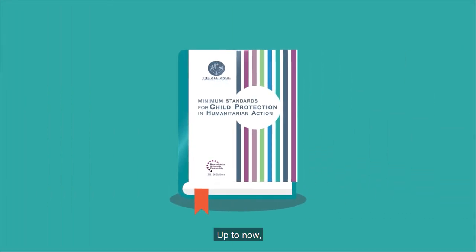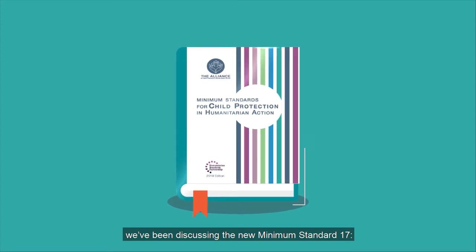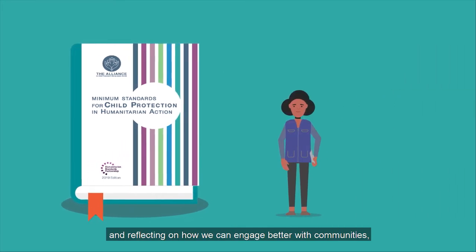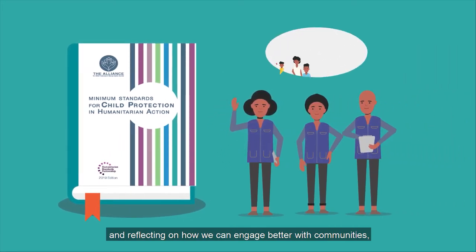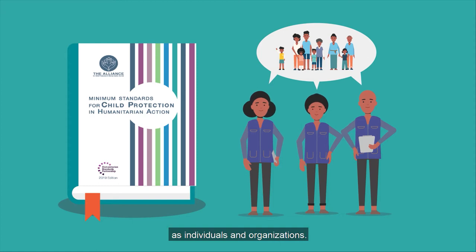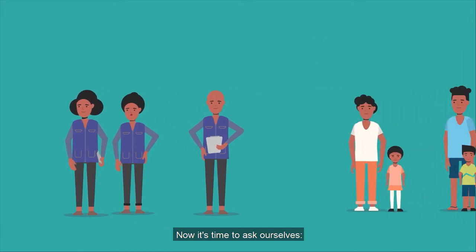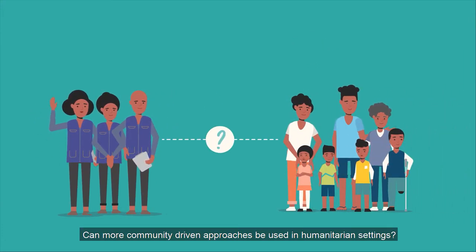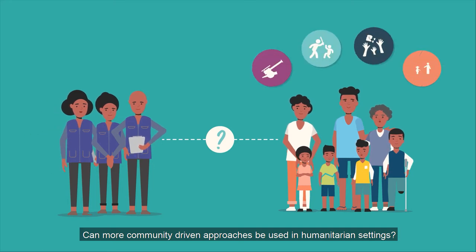Up to now, we've been discussing the new Minimum Standard 17, Community-Level Child Protection approaches, and reflecting on how we can engage better with communities as individuals and organizations. Now it's time to ask ourselves: can more community-driven approaches be used in humanitarian settings?